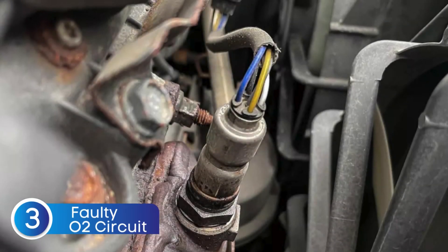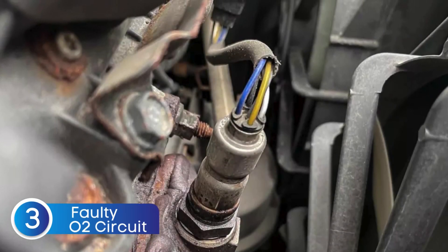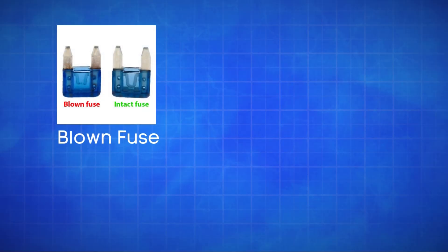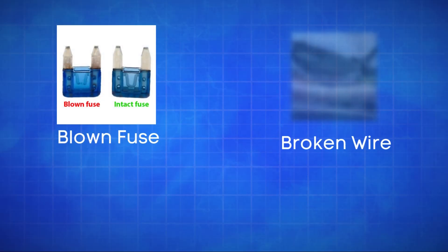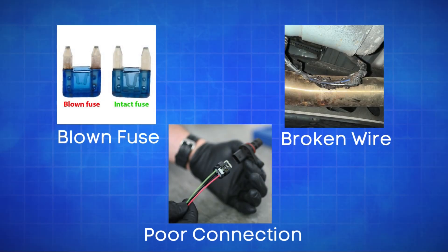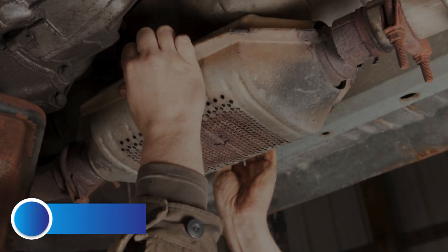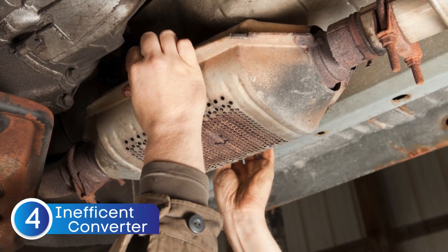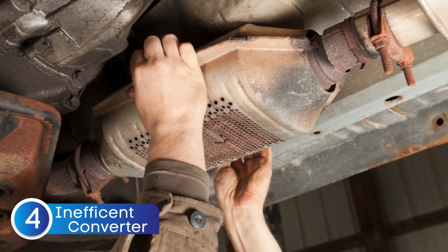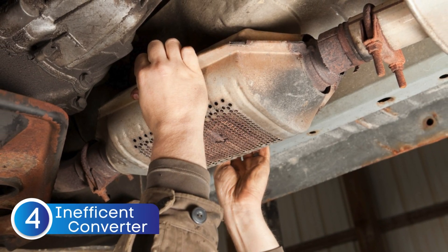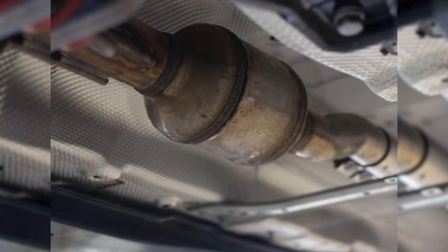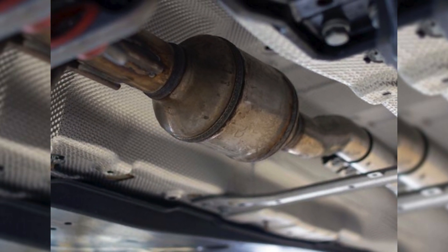The third cause is defective sensor wiring or circuit problems. Issues like a blown fuse, broken wires, or poor connections in the oxygen sensor circuit can disrupt the signal to the ECU, causing the P0430 code. The fourth cause is an inefficient catalytic converter. When the catalytic converter becomes inefficient, it fails to adequately reduce harmful emissions, which the oxygen sensors pick up on.